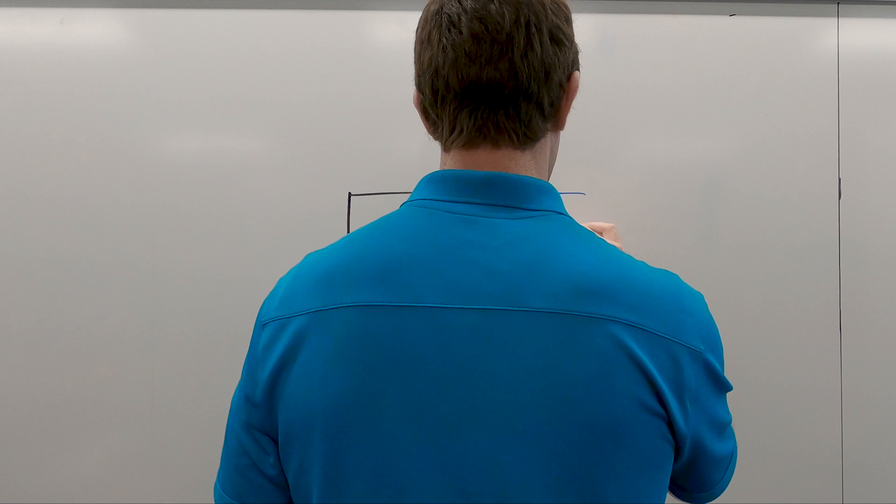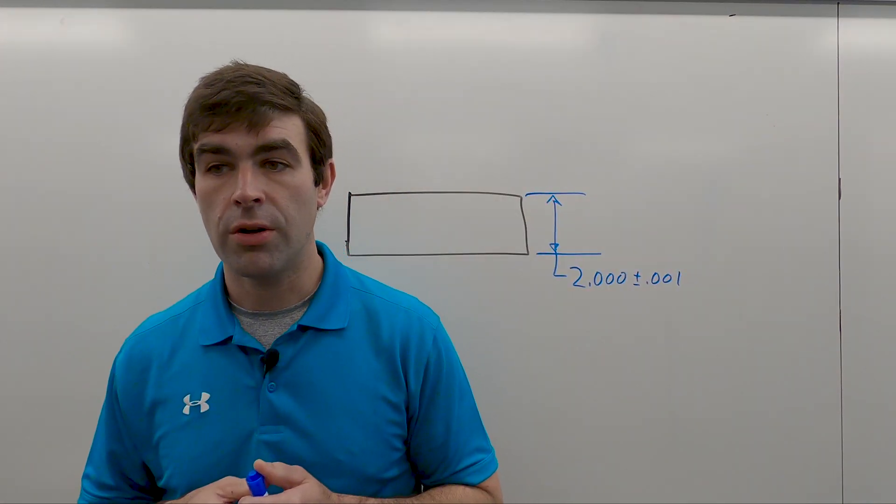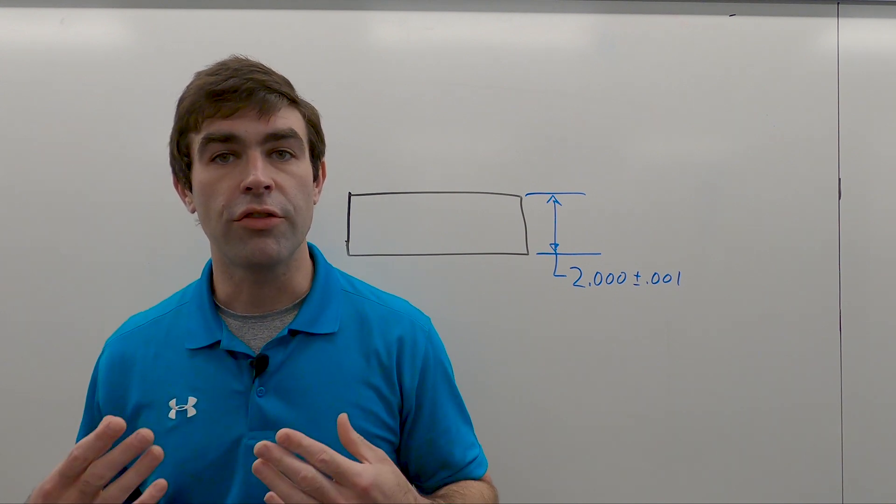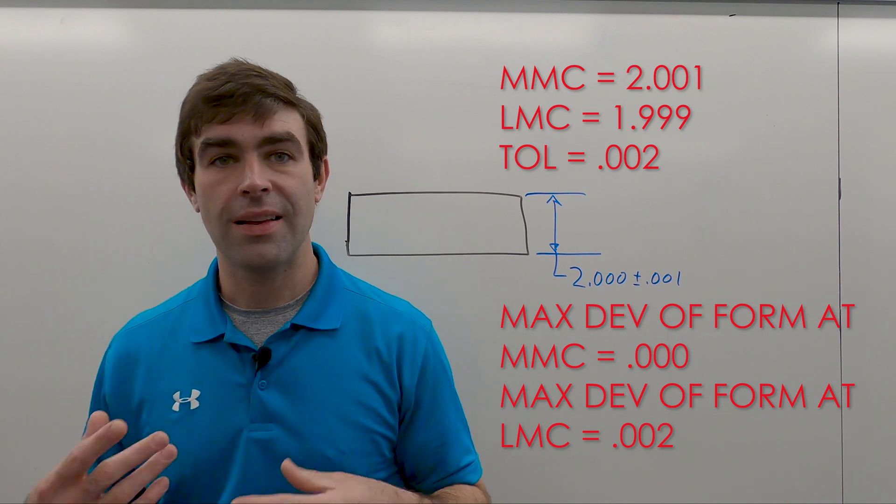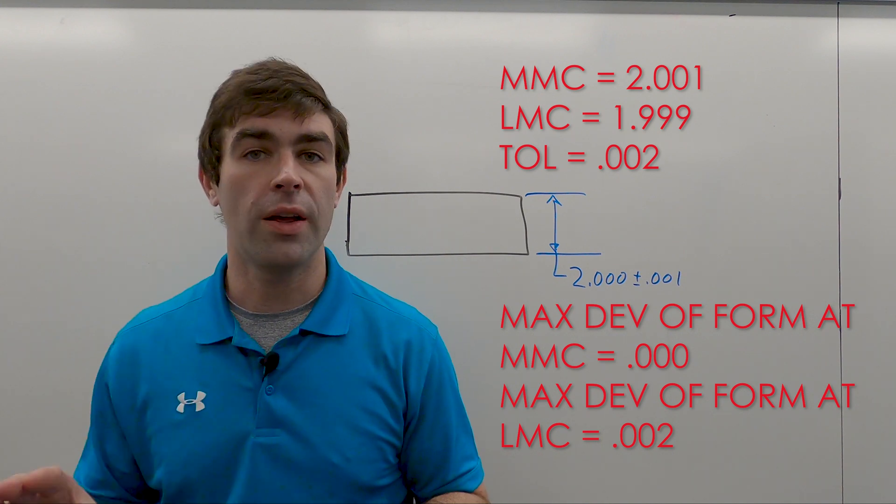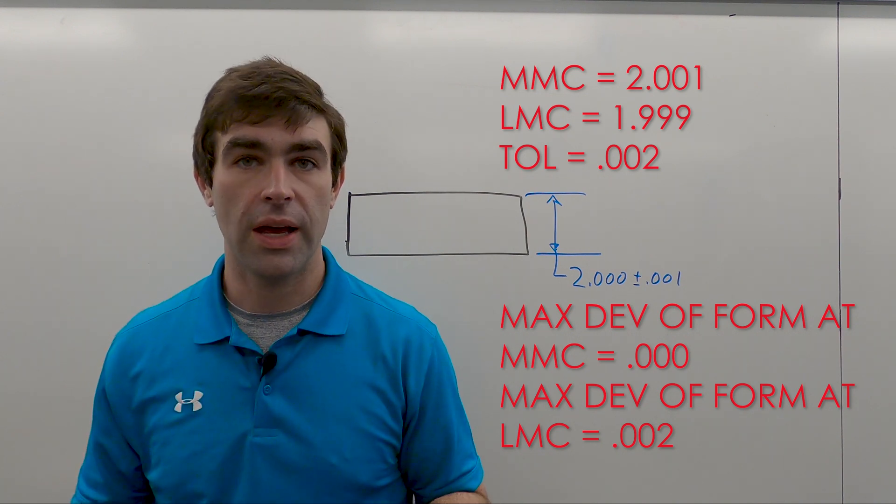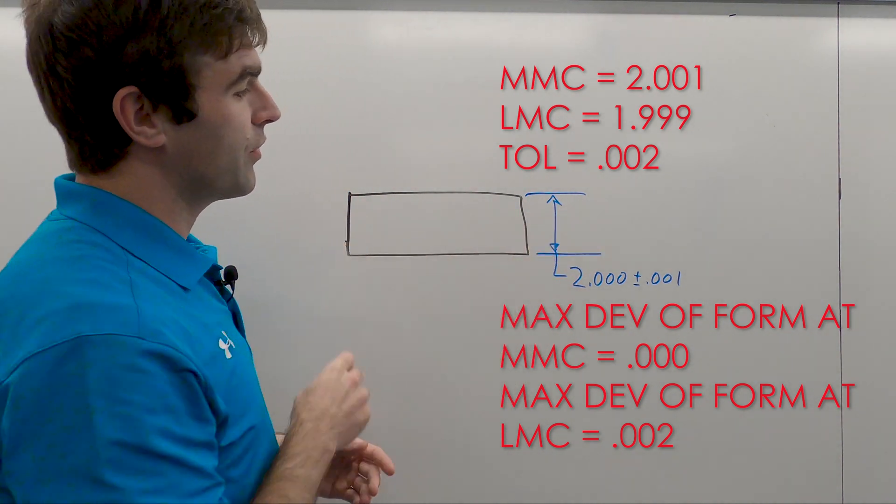So let's say plus or minus one thou, just for fun. This surface plate that I've drawn can have a maximum deviation in form of two thousandths. If it comes in and it's at LMC at any local cross sections, those areas can be undersized and it'll be okay, but this would have to fit in a perfect form boundary.